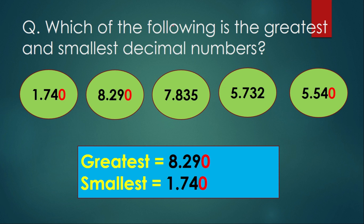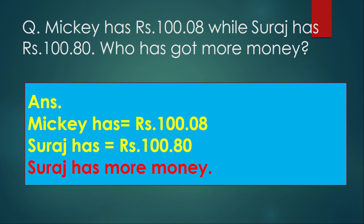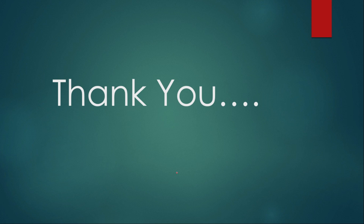The last question is a word problem: Mickey has rupees 100.08 and Suraj has rupees 100.80 — who has more money? We write down both amounts and compare. The whole number part is 100 for both, so we look at the decimal part: 0.08 versus 0.80. That means 8 versus 80, and 80 is greater, so Suraj has more money. I hope you have understood the concept of like and unlike decimals and can complete the assignment. Thank you, children — bye bye, stay safe, stay at home, see you soon.